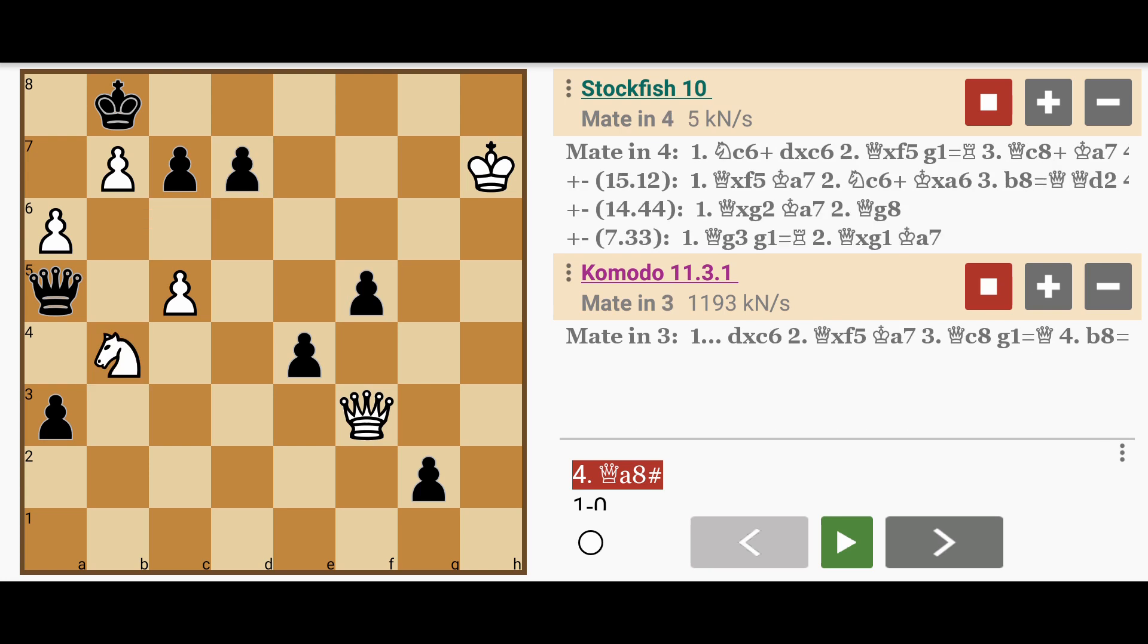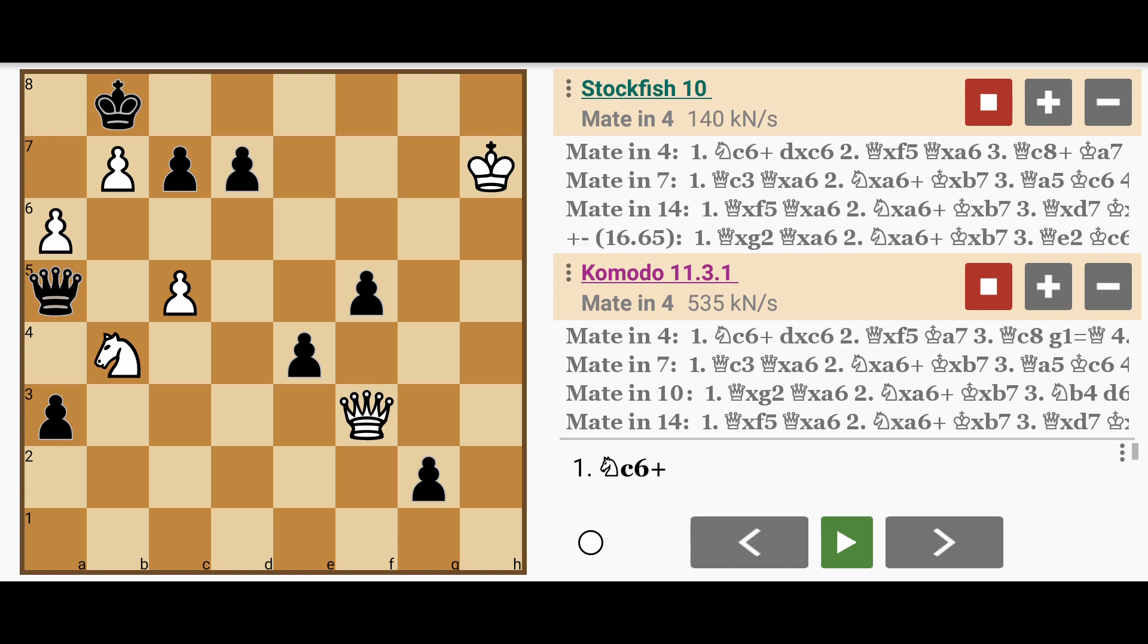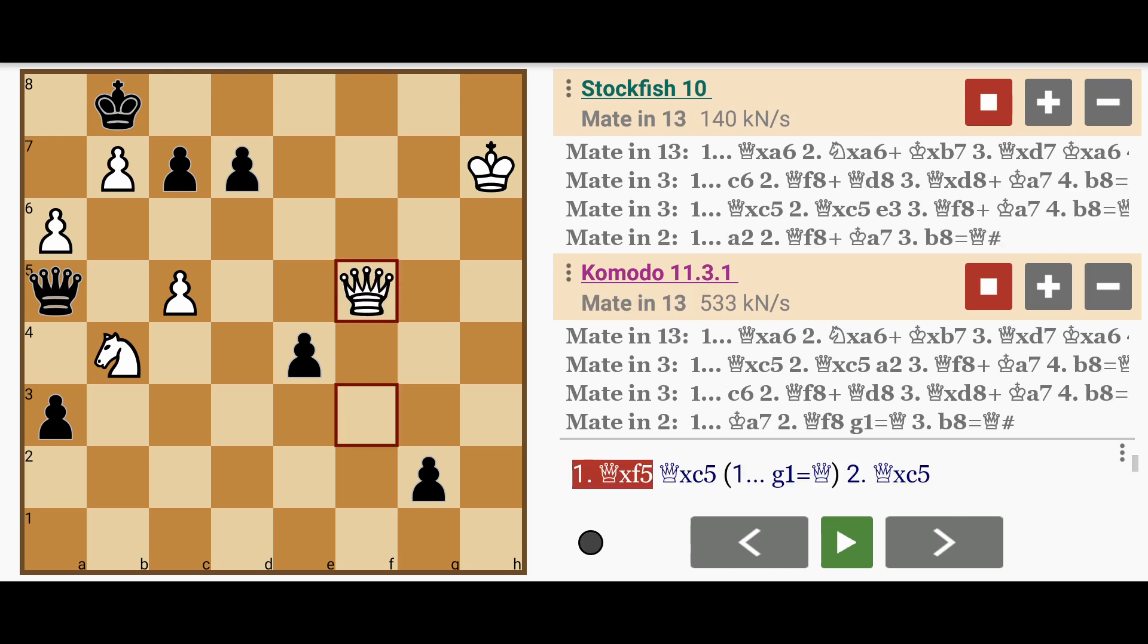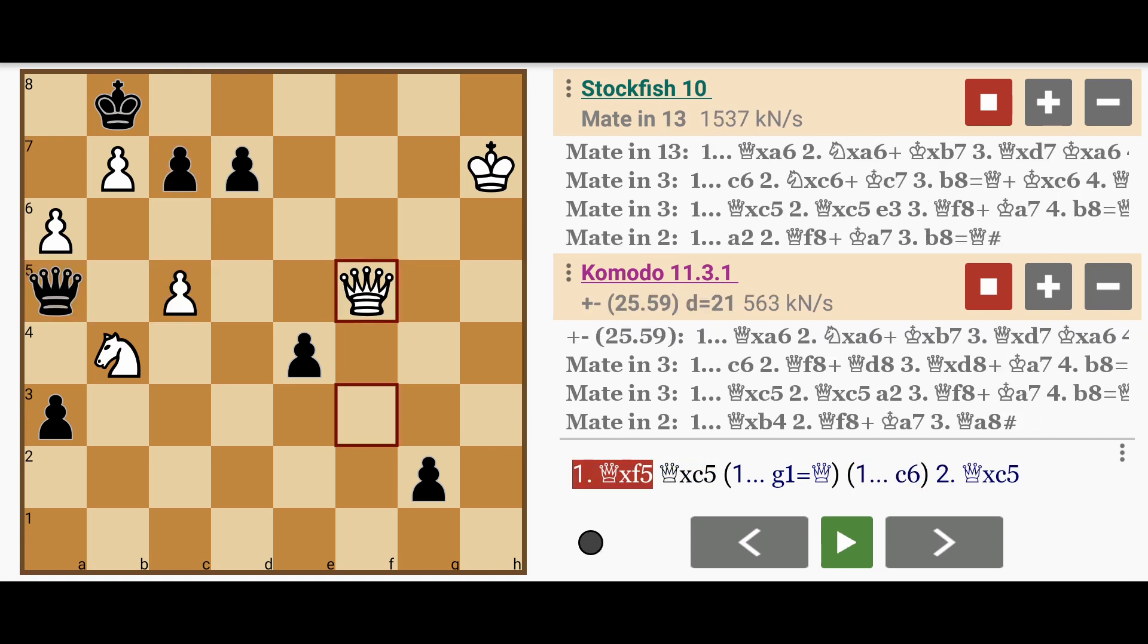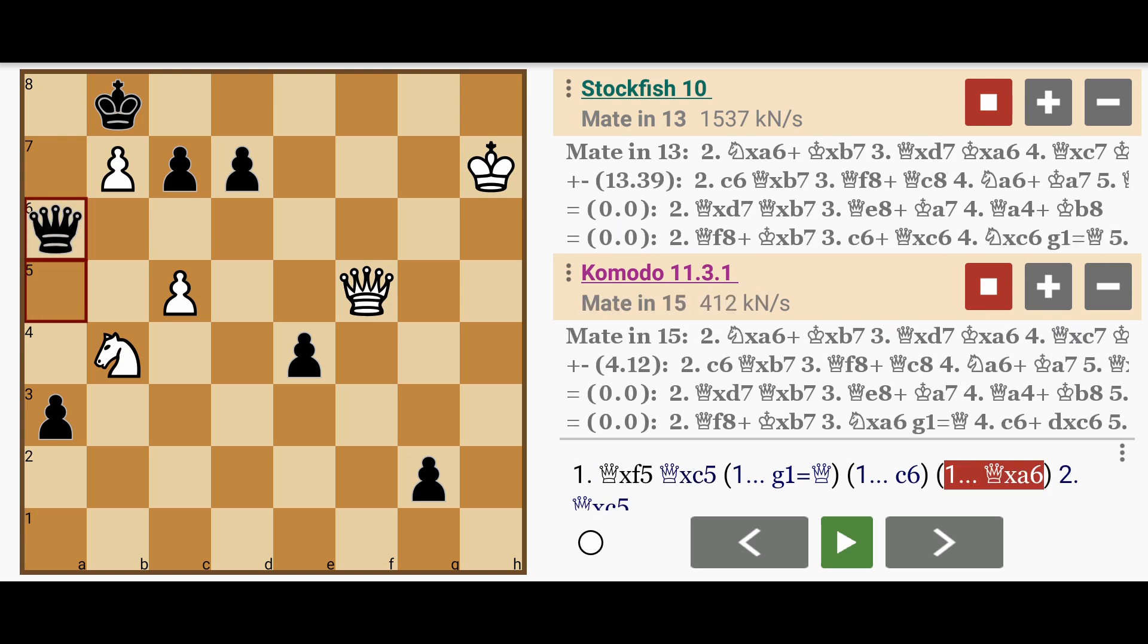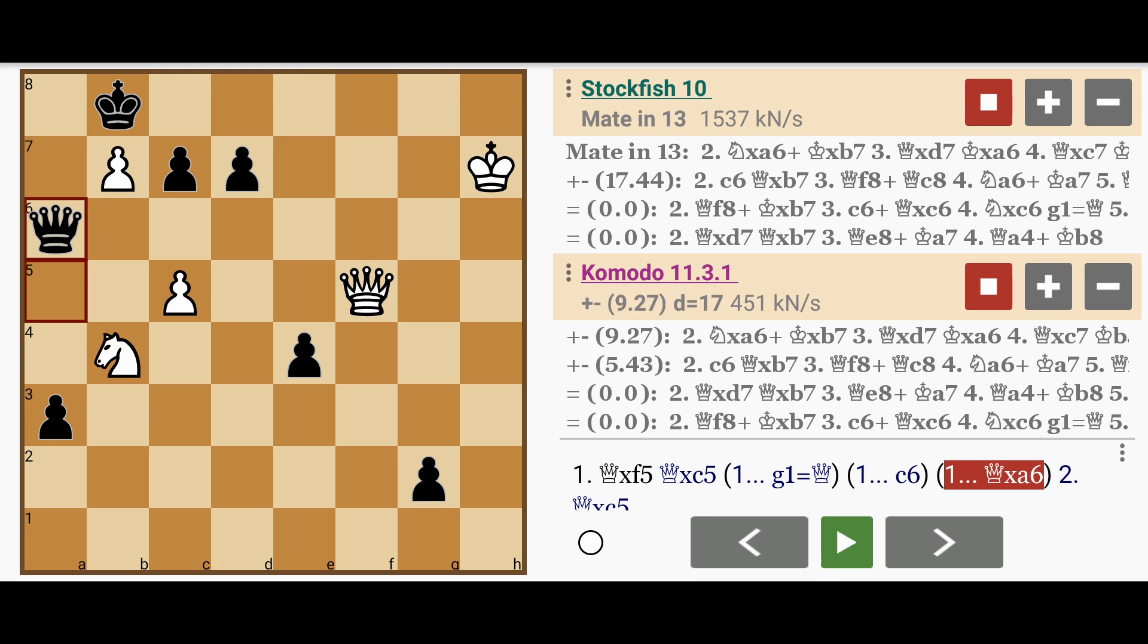Looking back at the original position, this checkmate could be missed even by an experienced player. If White plays queen captures f5 instead, threatening queen to f8, Black might respond with moves like c6 or queen captures c5, or more effectively queen captures a6, which loses the queen but delays checkmate considerably compared to the original mate in 4 solution.